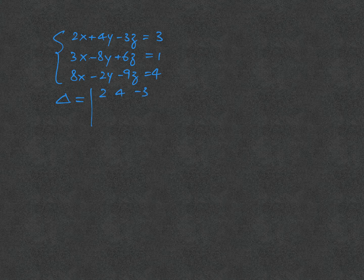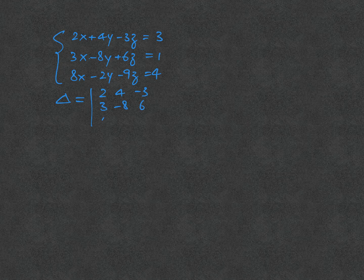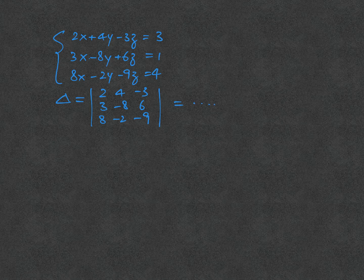Instead, I'll do the determinant: 2, 4, minus 3, 3, minus 8, and 6, 8, minus 2, and minus 9. Do it very carefully and obtain the answer, 294. This is what we call delta, the determinant.